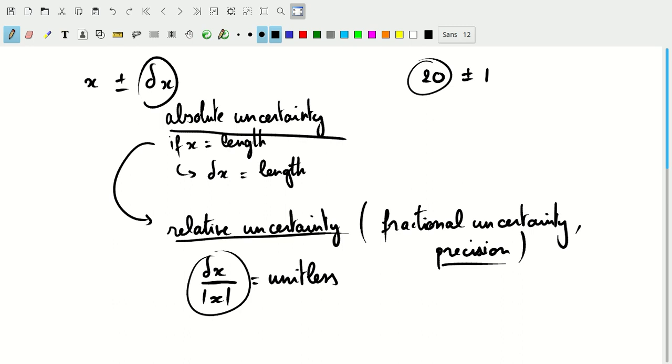So if this is 20 plus or minus 1, then the relative uncertainty of that value is 1 over 20, or 5 percent. This is a 5 percent precision measurement because 1 is 5 percent of 20.